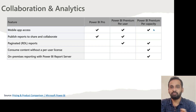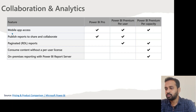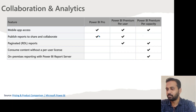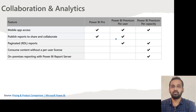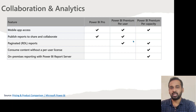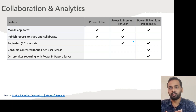You may think that Premium Per User and Premium Per Capacity must have the same functionality, but that is also not right — there is also a difference between Premium Per User and Premium Per Capacity. Publish reports to share and collaborate is available in Pro, and the other licenses as well. With PPU, if the other person wants to view the report, they must also have a Premium Per User license. Whereas with capacity, it doesn't matter — everybody in the organization can view the report if it is shared to them, without a Power BI Pro or Premium Per User license.